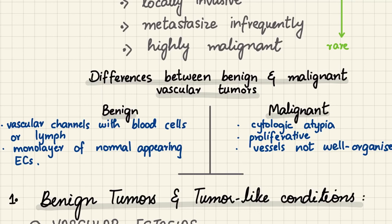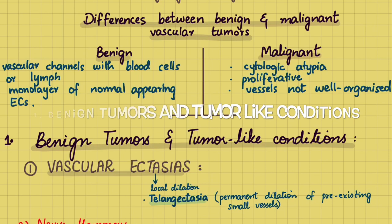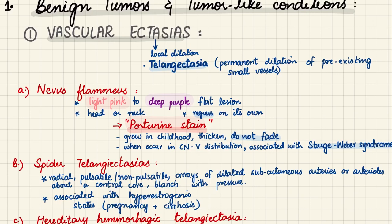Depending on their ability to metastasize and their malignant potential, vascular tumors are divided into: benign tumors and tumor-like conditions, intermediate grade or borderline tumors, and malignant tumors. We will begin with benign tumors and tumor-like conditions, starting with vascular ectasias.